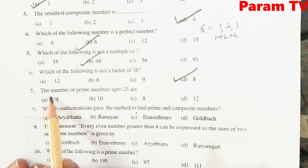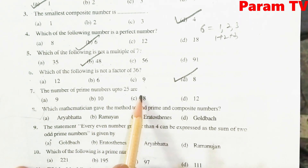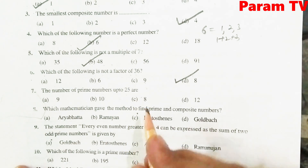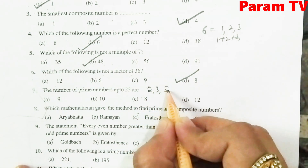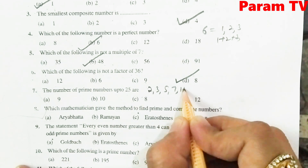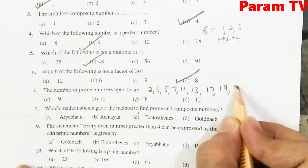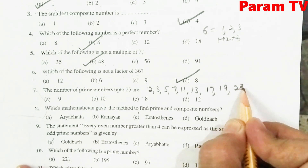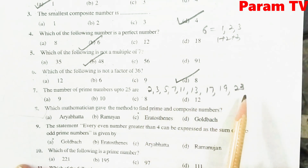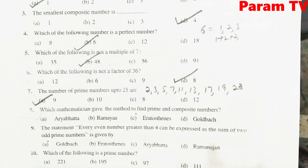7th question: the number of prime numbers up to 25. 25 तक कितने prime numbers हैं? वो table को recall कीजिए: 2, 3, 5, 7, 11, 13, 17, 19, और 23. उसके बाद 29 आता है, which is greater than 25. तो count कीजिए — 1, 2, 3, 4, 5, 6, 7, 8, 9. A is the right option — 9.